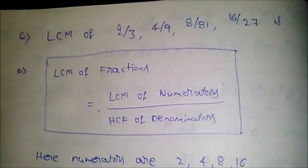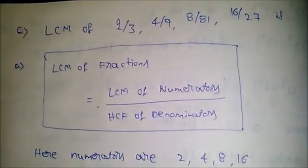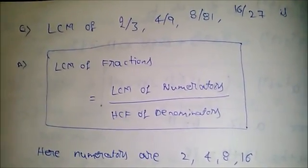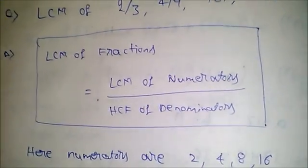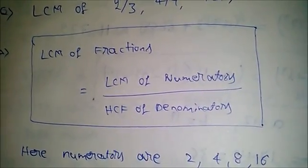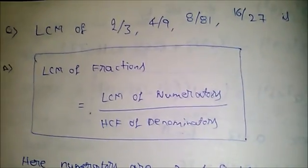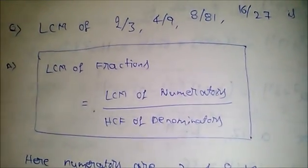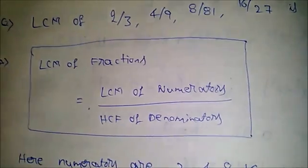...we should know the formula. The formula is: LCM of fractions equals LCM of numerators divided by HCF of denominators. That is, we have to find the LCM of numerators and HCF of denominators, then substitute in this formula.